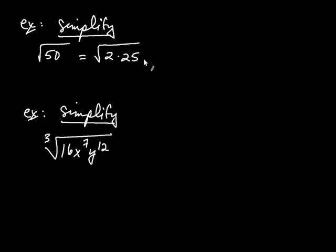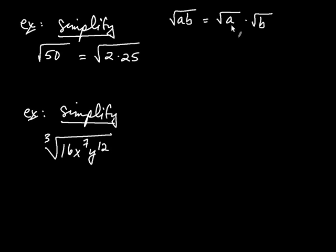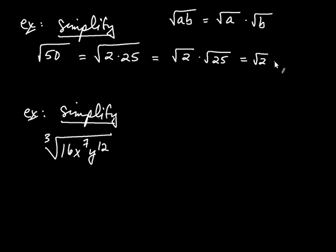Now, the reason I chose that factorization rather than 5 times 10 is because 25 is a perfect square. I can use the product rule in the opposite direction — the square root of a·b can also be broken up into the square root of a times the square root of b. So I can write this as the square root of 2 times the square root of 25. The square root of 25 is 5, so this is the square root of 2 multiplied by 5, or 5 times the square root of 2. That will be our answer.